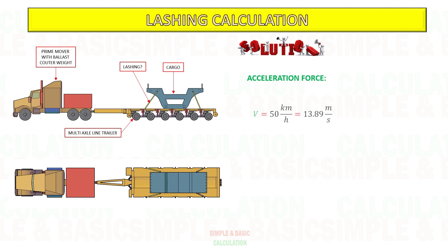First, calculate the acceleration force. Convert the velocity to meter per second. To get the acceleration force, divide the velocity by braking time. Next, calculate the inertia: weight of the cargo multiply by acceleration force divided by gravity.